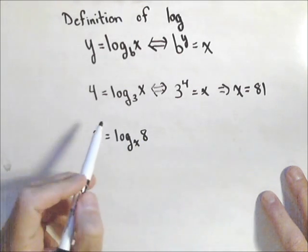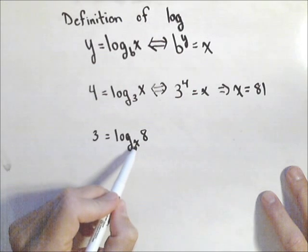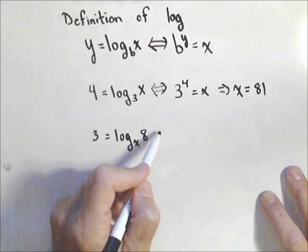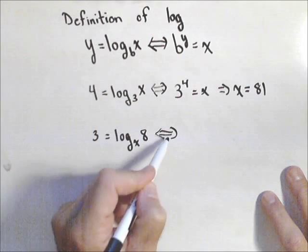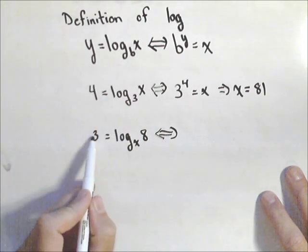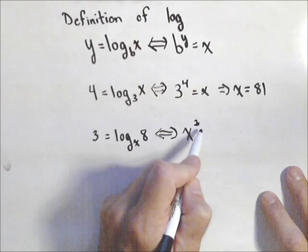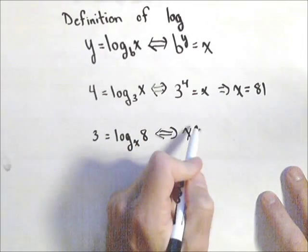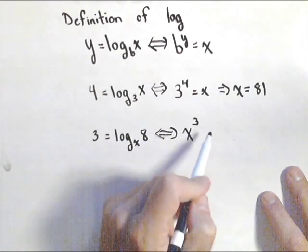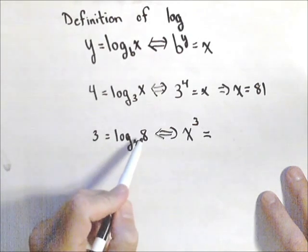The other way we might want to rewrite it is if our unknown is the base. So remember that it's the base to the exponent. So x cubed, let's rewrite that there, x cubed equals 8.